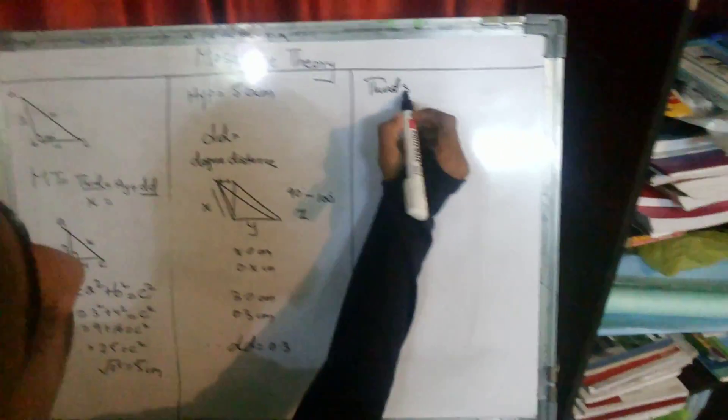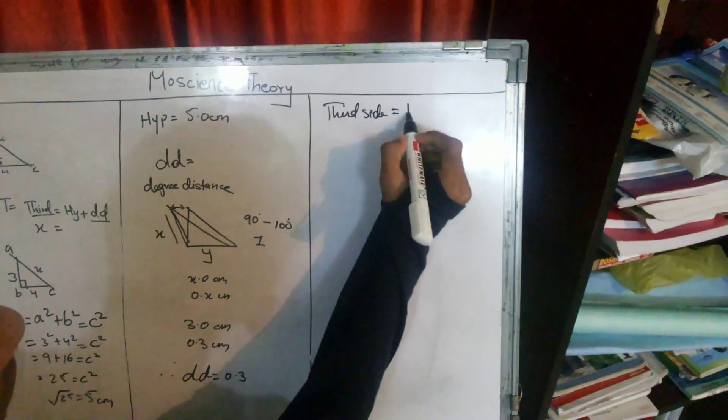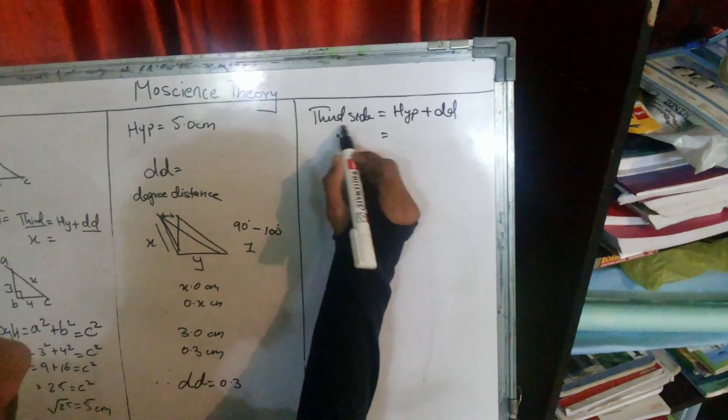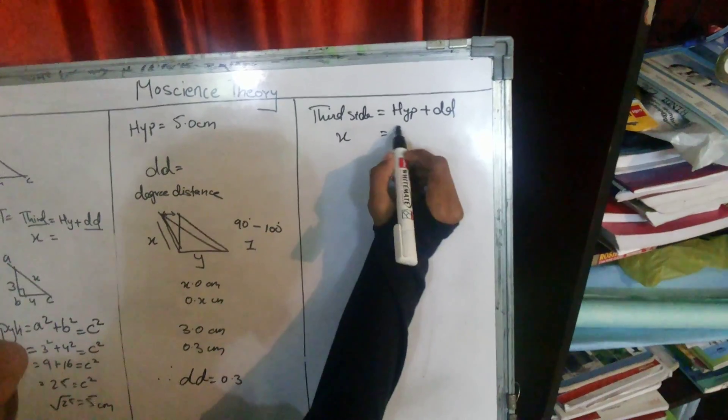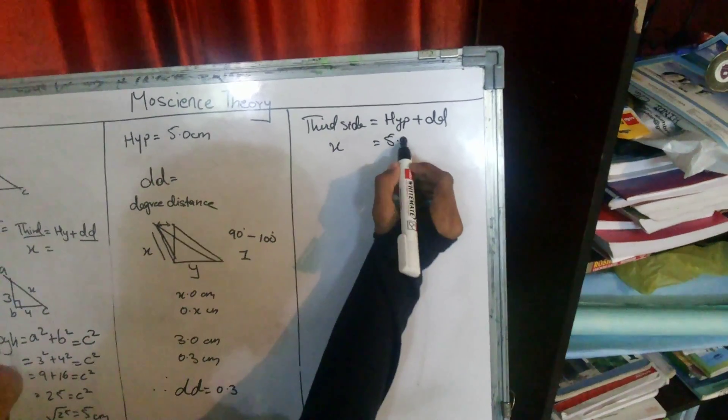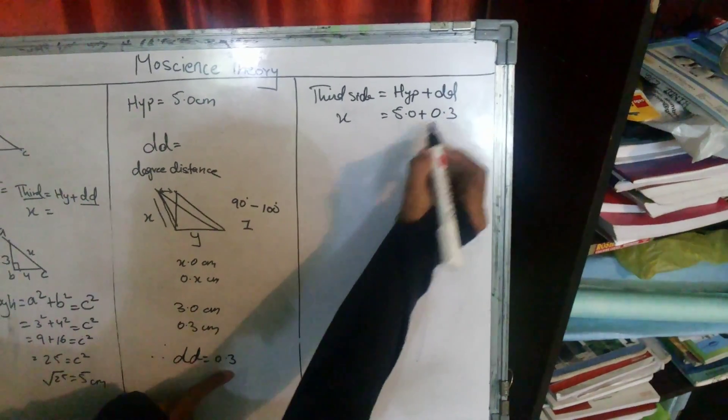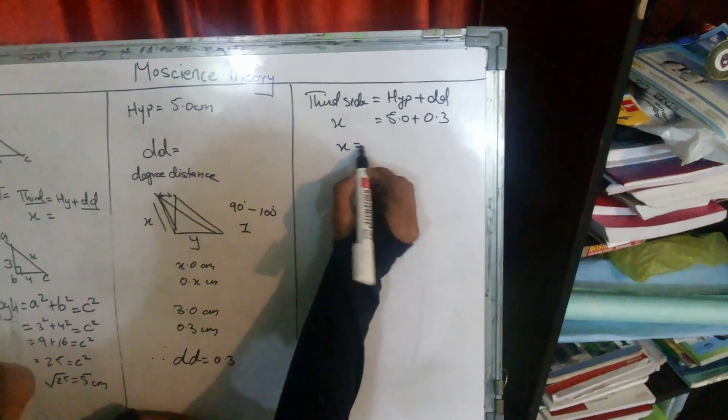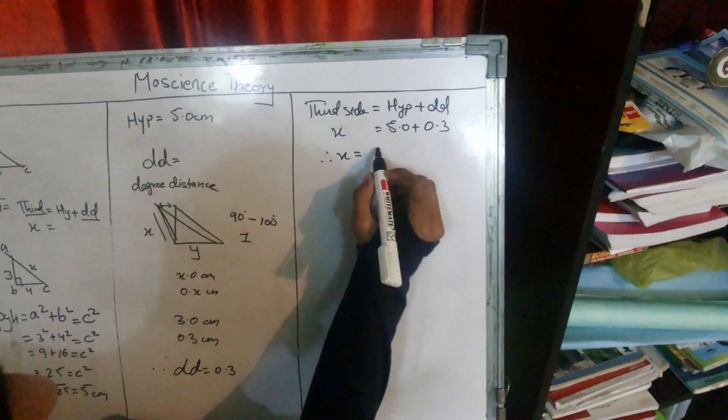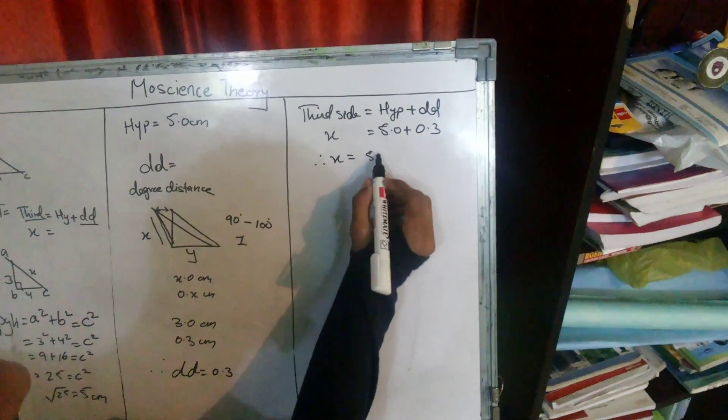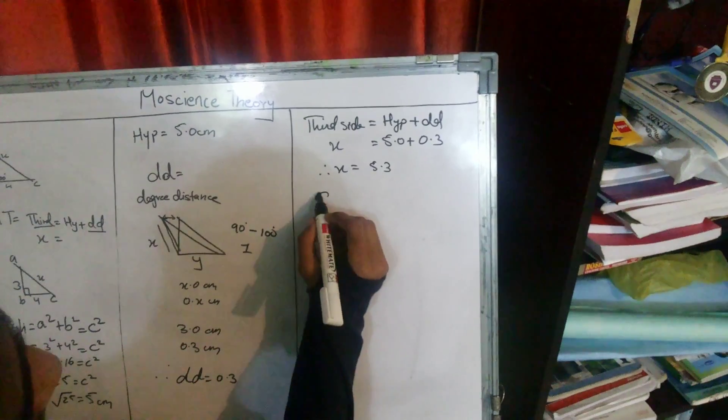Third side is equal to hypotenuse plus degree distance. Third side is equal to 5.0 plus degree distance 0.3 centimeter. Therefore, 5.0 plus 0.3 is equal to 5.3. So the third side